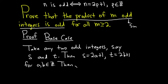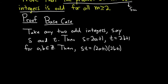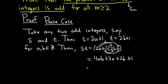Then st is equal to (2a+1)(2b+1). And this is equal to — we can multiply this out — 2a times 2b is 4ab, 2a times 1 is 2a, 1 times 2b is 2b, 1 times 1 is 1. Then we can pull out a 2, so that'll be 2(2ab + a + b) plus 1, just pulling out a 2 from all of those terms, plus 1.